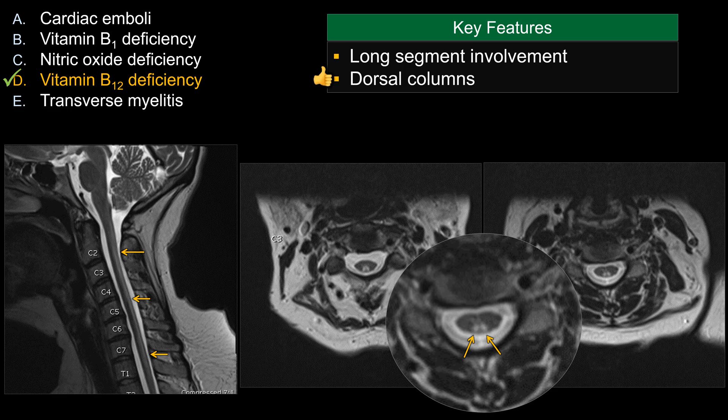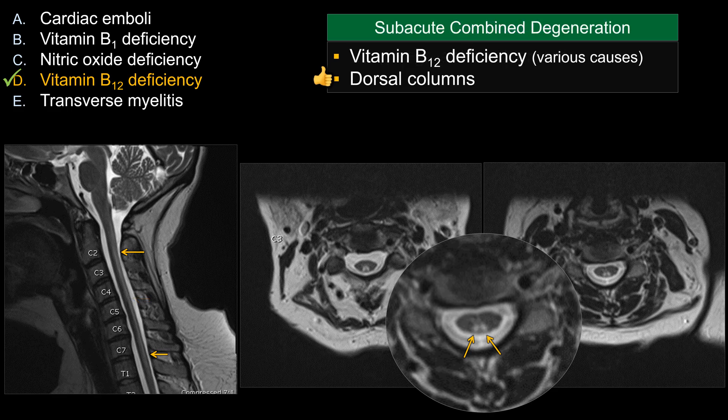There is a relatively short list of differential diagnoses for lesions that can do this. This is due to vitamin B12 deficiency causing subacute combined degeneration. Essentially any cause that can lead to vitamin B12 deficiency can produce this very distinct symmetric dorsal column involvement.